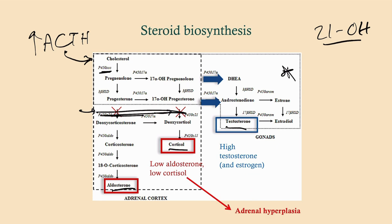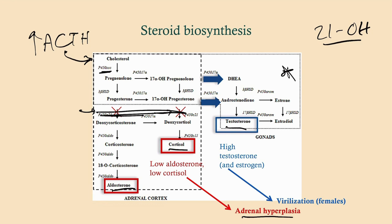With the low aldosterone and low cortisol, we'll see adrenal hyperplasia as well as salt wasting. With the high testosterone and estrogen, we'll see virilization in females.